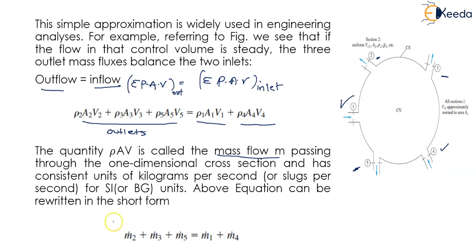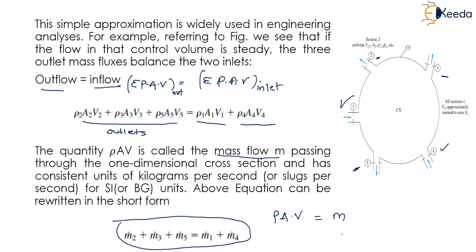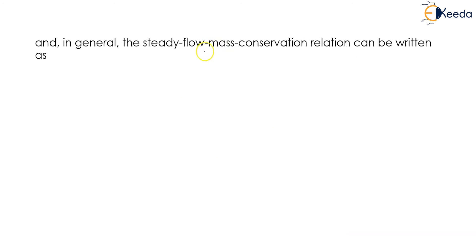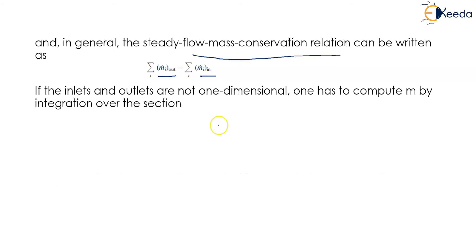The term ρAV can be written as the mass flow M, and in general the steady flow mass conservation relation can be written as: the summation of mass going outwards equals the summation of mass coming inwards. If the inlets and outlets are not one-dimensional, one has to compute M by integration over the section.